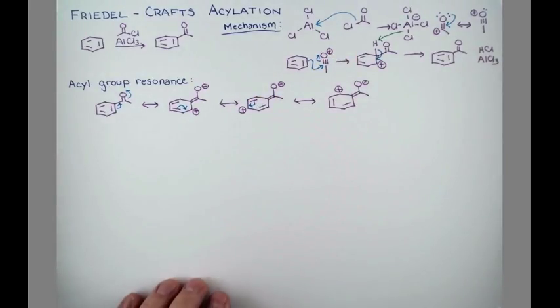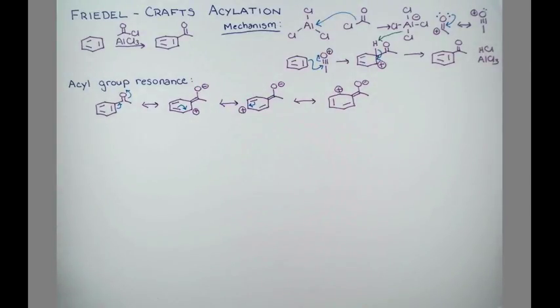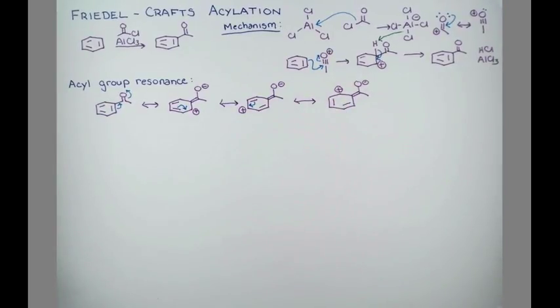There are two things that we should notice. First of all, all the resonance forms put positive charges on the ring. This deactivates the ring toward further electrophilic aromatic substitution. If this already has positive character, it doesn't really want to attack a positive electrophile again. So this ring is deactivated toward further reaction.